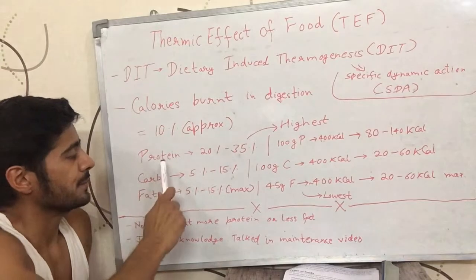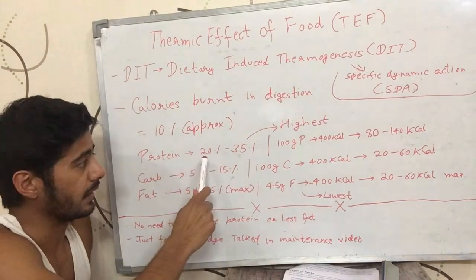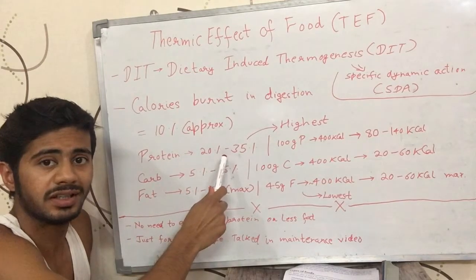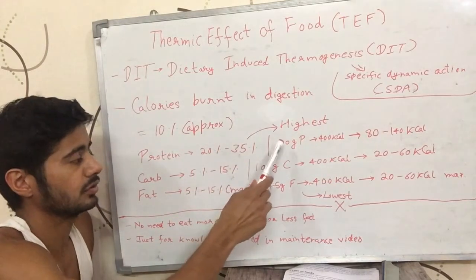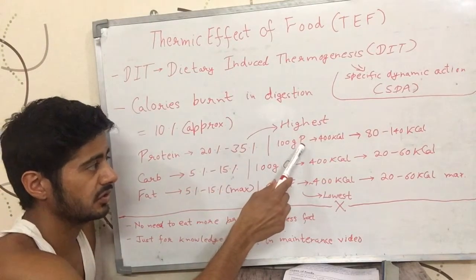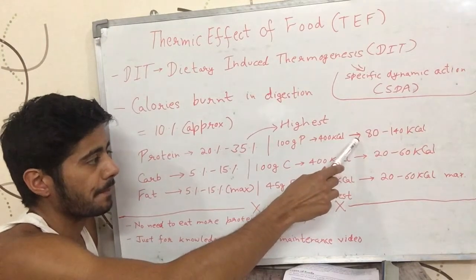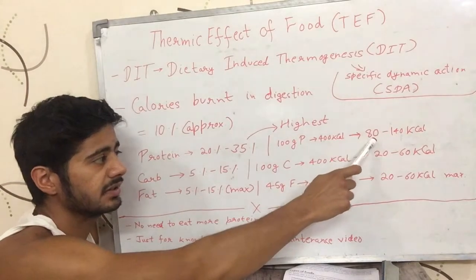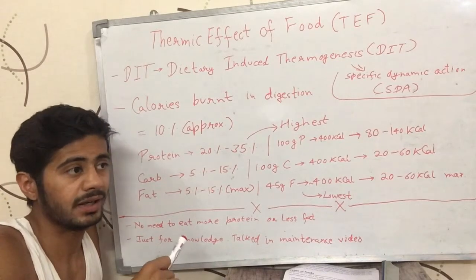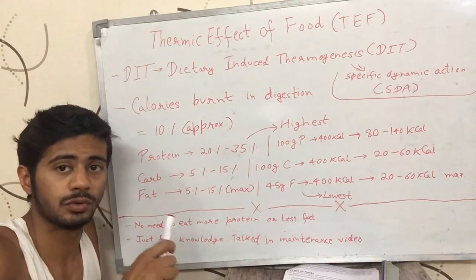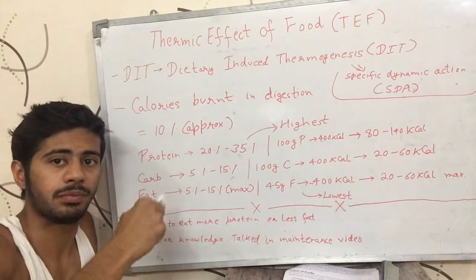Protein burns the maximum amount of calories in digestion — it has the highest TEF, which is about 22 to 35%. So if you ate 100 grams of protein, which has 400 calories (1 gram of protein has 4 calories), then 22 to 35% means 80 to 140 calories out of those 400 calories will be burnt just to digest that protein itself.